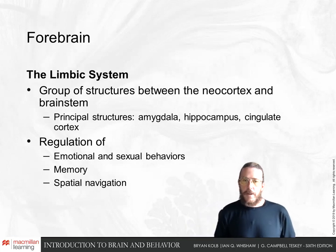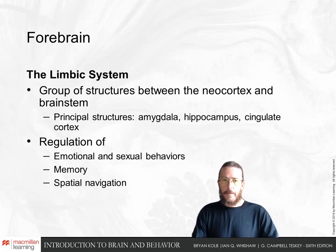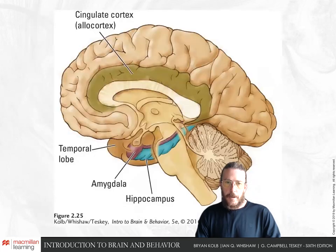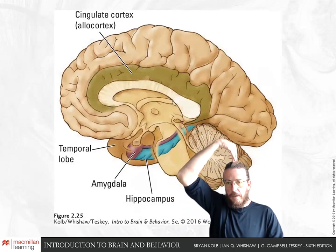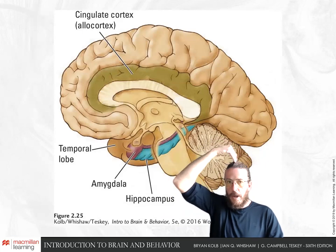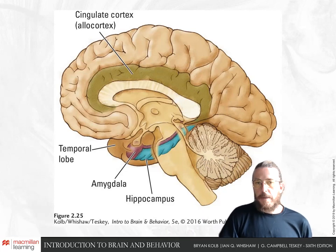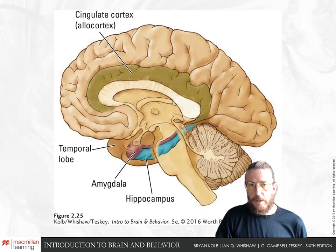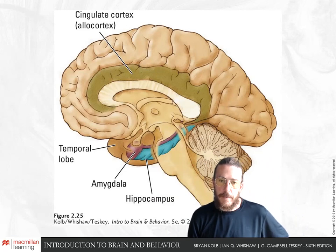The limbic system is a group of nearby connected structures involved in regulation of emotion, memory, and spatial navigation. The principal structures are the amygdala, hippocampus, and cingulate cortex. The cingulate cortex is an ancient part of the allocortex — with only four layers — found on the inside surface of the cortex above the corpus callosum, involved in regulating emotions, motivations, and behaviors. The hippocampus is closely involved in memory, and the amygdala in fear and anxiety.